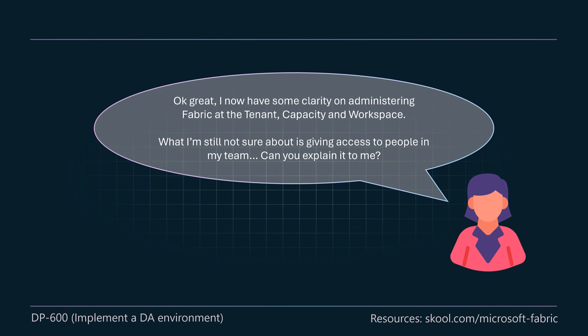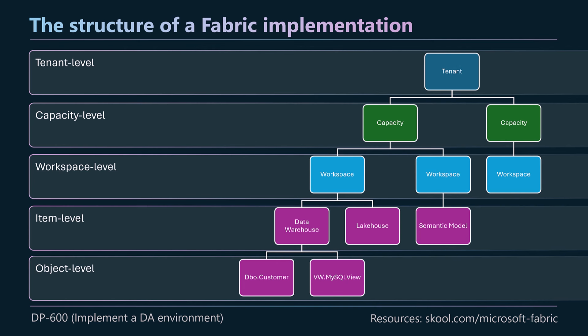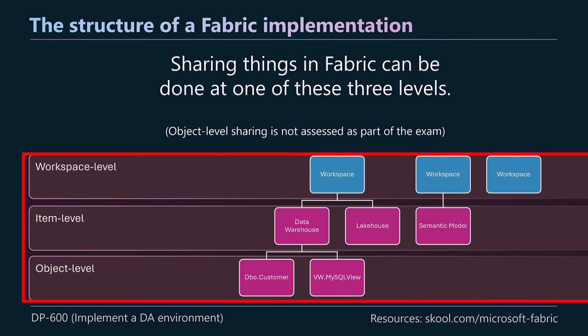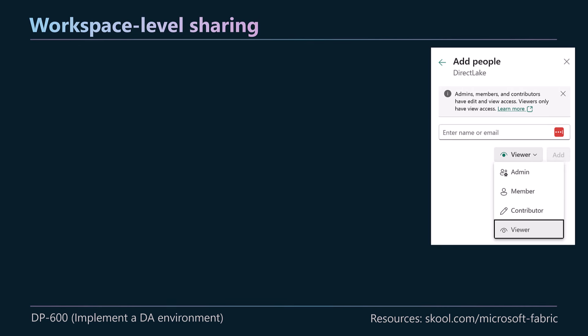Camilla says she now has clarity on administering Fabric at tenant, capacity, and workspace levels, but isn't sure about giving the right access to people on her team. Going back to our Fabric architecture, sharing items is normally done at the three bottom levels. Object level sharing is possible for the data warehouse and SQL endpoint of the lake house, but it's not part of this exam's study guide, so we won't cover it here — documentation is available on Microsoft Learn.